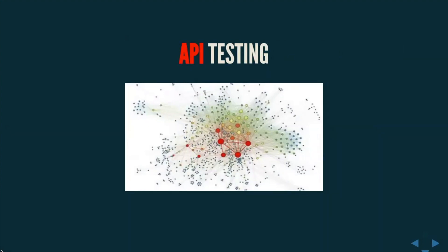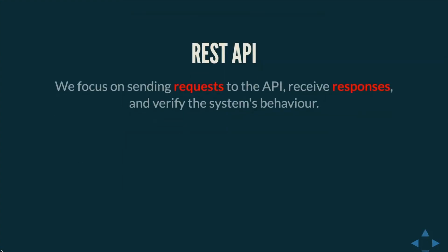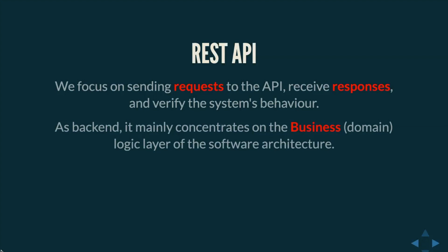Next, let's move to API testing and how we can approach this domain, structure our tests, and apply good practices when testing APIs. When we talk about APIs today, we think about REST API backends — how we send requests, receive responses, and verify the system's behavior. You may remember from a previous talk the triple-A pattern: Arrange, Act, and Assert. Backends mainly concentrate the business logic, and most of the domain is tightly coupled to concrete business operating flows and how modules interact with each other.